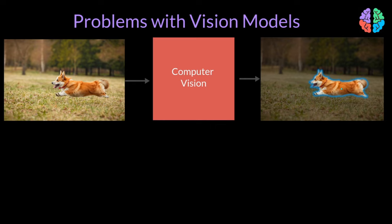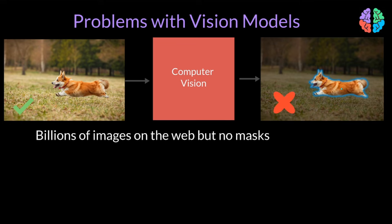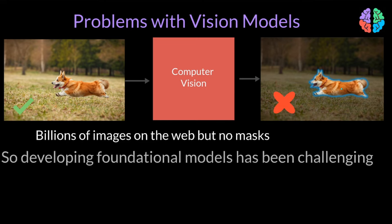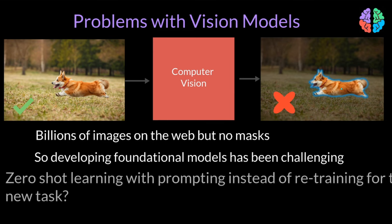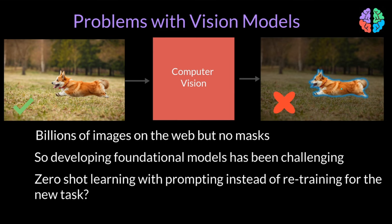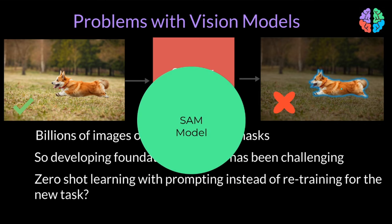When it comes to computer vision, even though we have billions of images on the web these days, these images are not labeled with bounding boxes or segmentation masks. So establishing foundation models has been challenging. Can we address this very problem and introduce foundational models for computer vision — more specifically for segmentation — so that we can do zero-shot learning for a different task using just prompting instead of retraining? The Segment Anything Model, or SAM, does just that and solves this very problem.